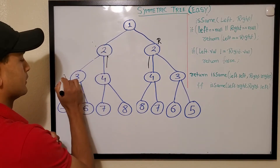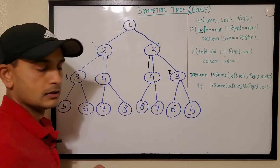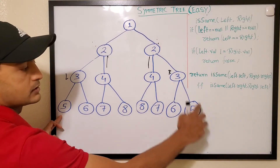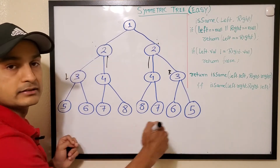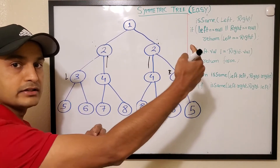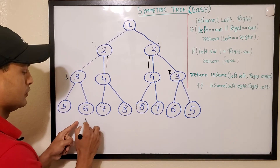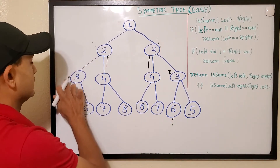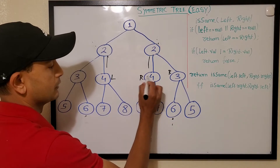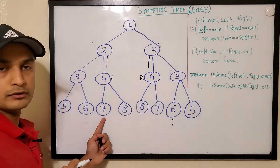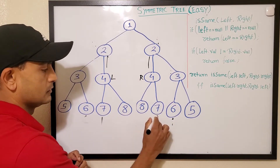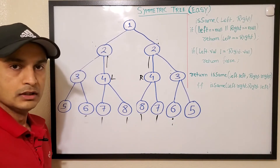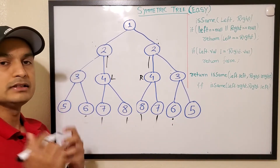Let's verify that these comparisons hold at the next level. Left node's left child matches right node's right child, and left node's right child matches right node's left child. Let's do one more level — left child's left node and right child's right node match, and left child's right node and right child's left node match. So it's a symmetric tree and those are the two rules we have to follow.